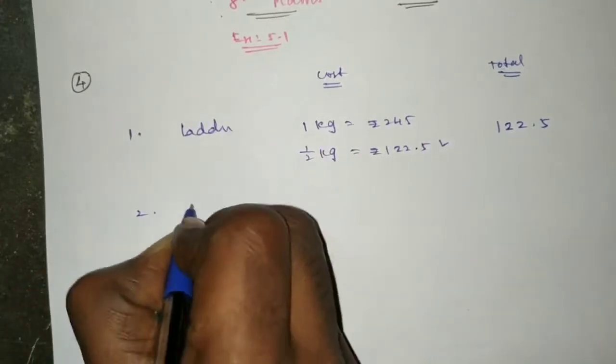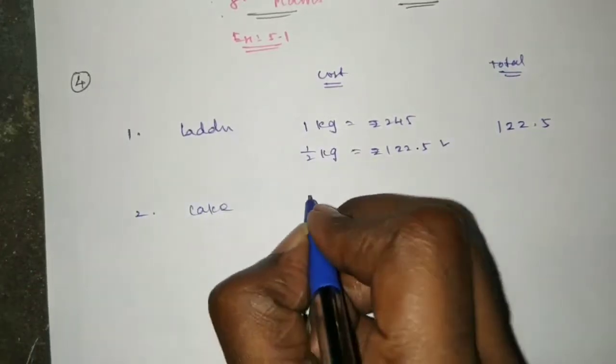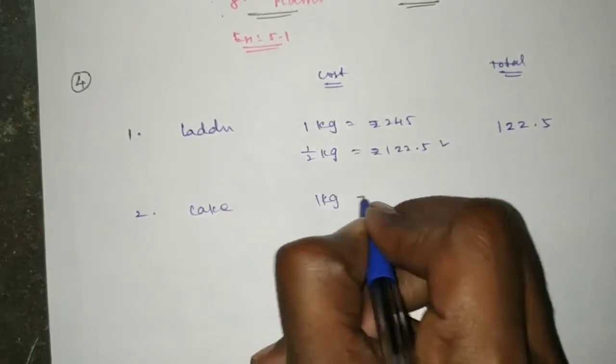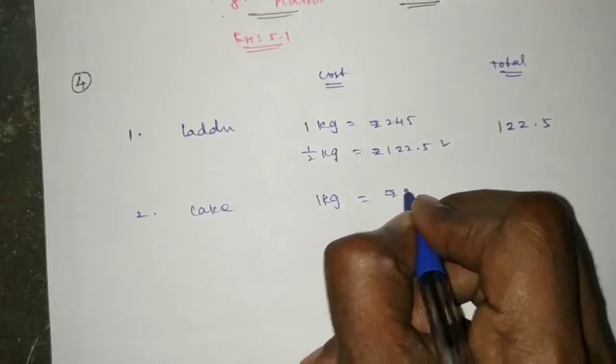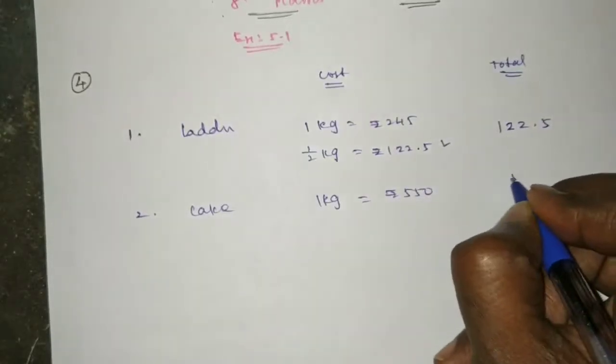The second one is the cake. The cake is 550 rupees for 1 kg.